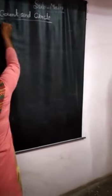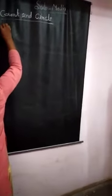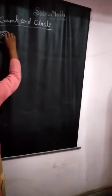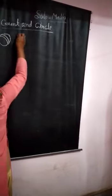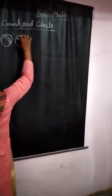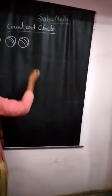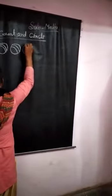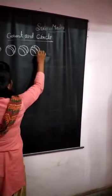Dekhye. Yee kya hai? Ball hai. Kya hai? Ball. One ball. Two balls. And three balls.